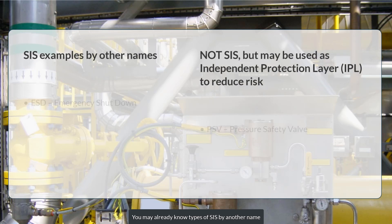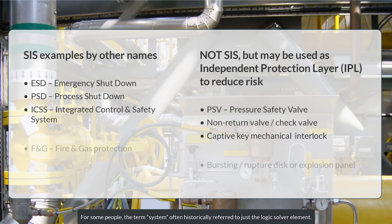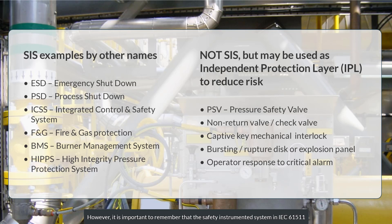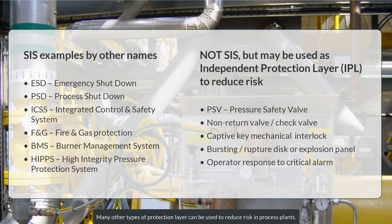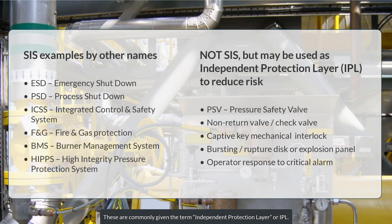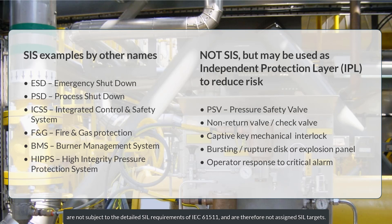You may already know types of SIS by another name, such as the examples shown here. For some people the term system often historically referred to just the logic solver element. However, it's important to remember that the safety instrumented system in IEC 61511 includes all the field equipment as well as the logic solvers. Many other types of protection layer can be used to reduce risk in process plants, commonly given the term independent protection layer or IPL. A SIF is one form of IPL that uses instrumentation. Non-instrumented IPLs such as mechanical relief valves are not subject to the detailed SIL requirements of IEC 61511 and are therefore not assigned SIL targets.